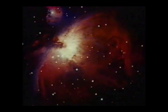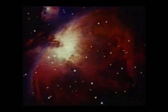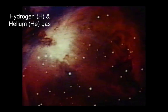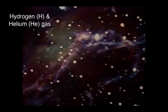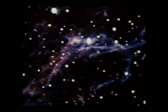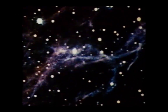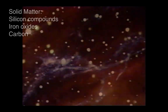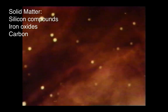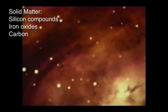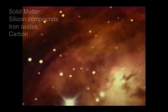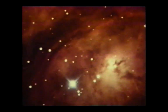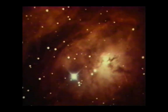Ninety-nine percent of nebular material is composed of hydrogen and helium gas. But about one percent consists of tiny bits of solid matter — silicon compounds, iron oxides, carbon, and a host of other materials, all of which are found in the sun and planets.